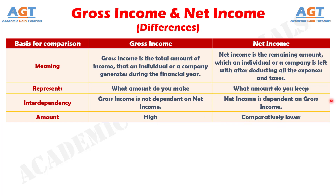In a nutshell, gross, as the name suggests, is the entire amount that a firm receives from any activity, without giving effect to deductions like expenses. Gross income means the amount by which revenue of the company supersedes the cost of production.